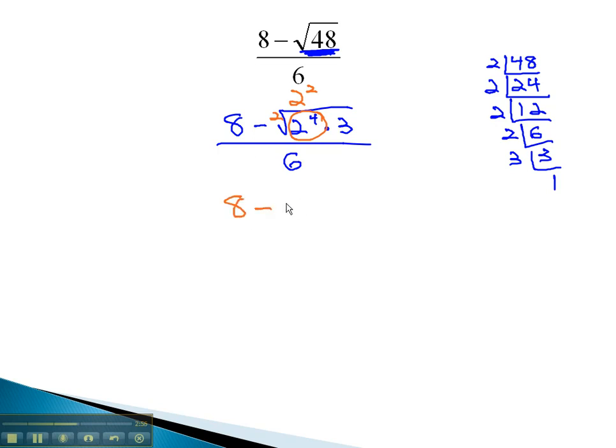We now have 8 minus 2 squared, which is 4, square root of 3 over 6.